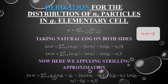We have a derivation for the distribution of nᵢ particles in gᵢ elementary cells. In the previous lecture we developed: W = Π (from i=1 to N) of gᵢ! divided by nᵢ!·(gᵢ - nᵢ)!, where gᵢ is the number of states and nᵢ is the number of particles. Taking the natural log of W, and since we have a product (π sign), we get a summation.